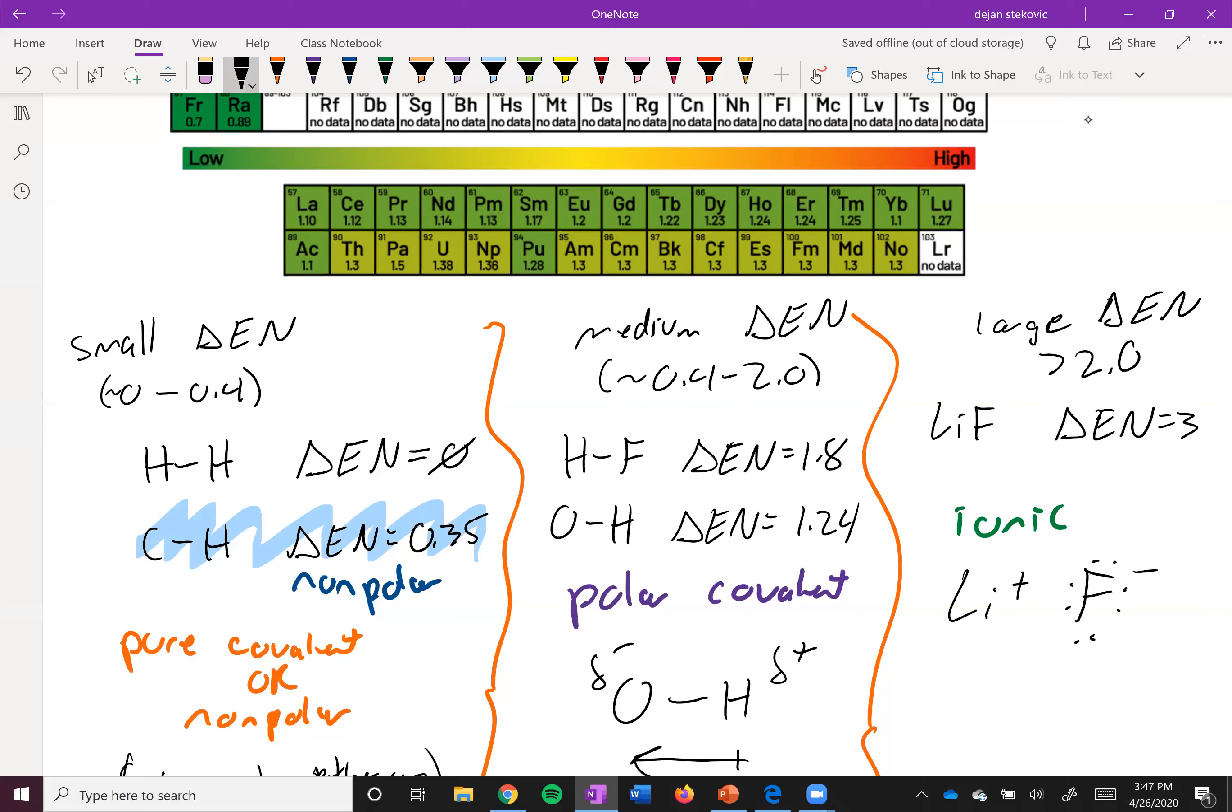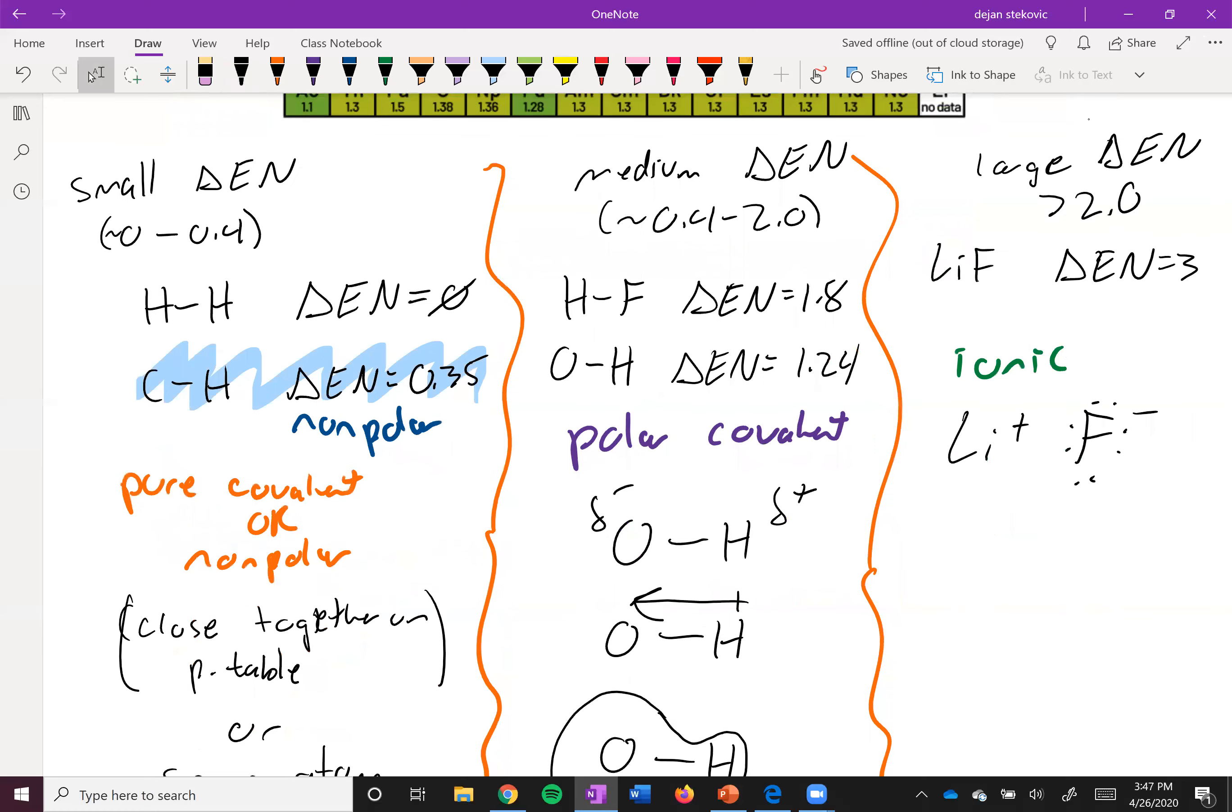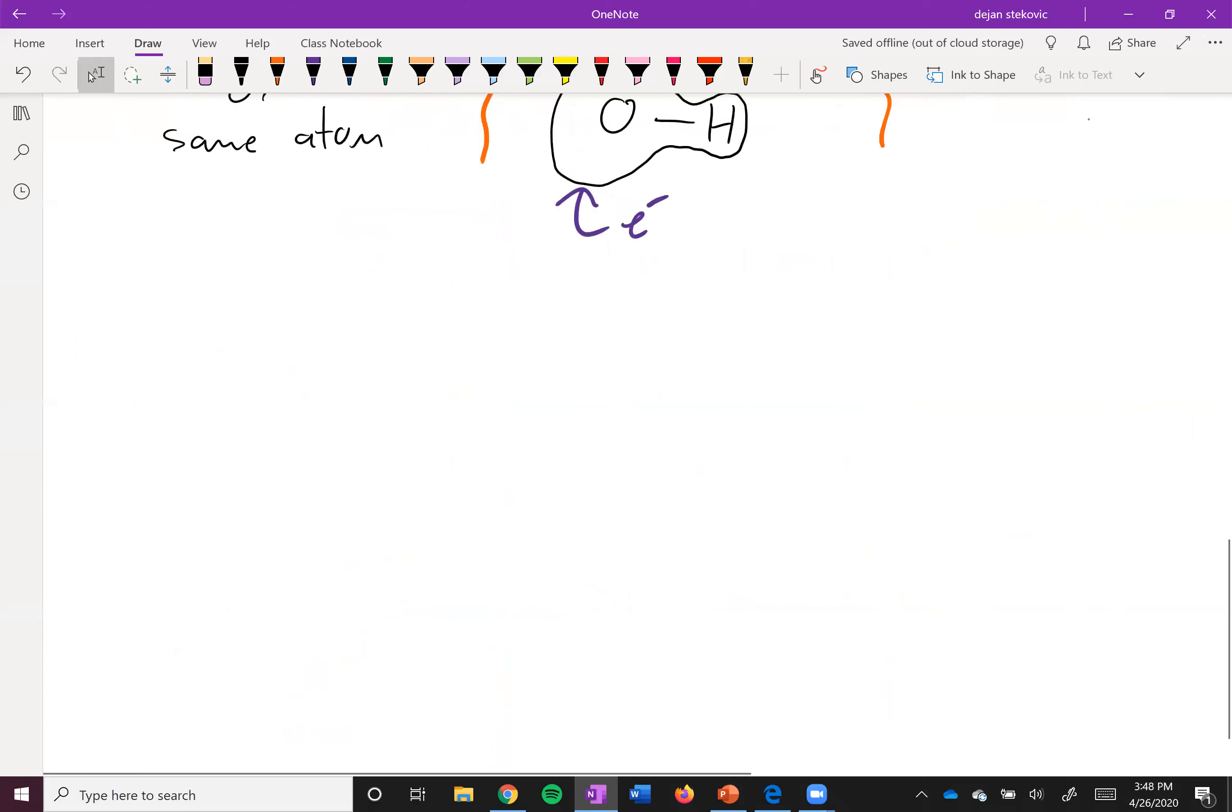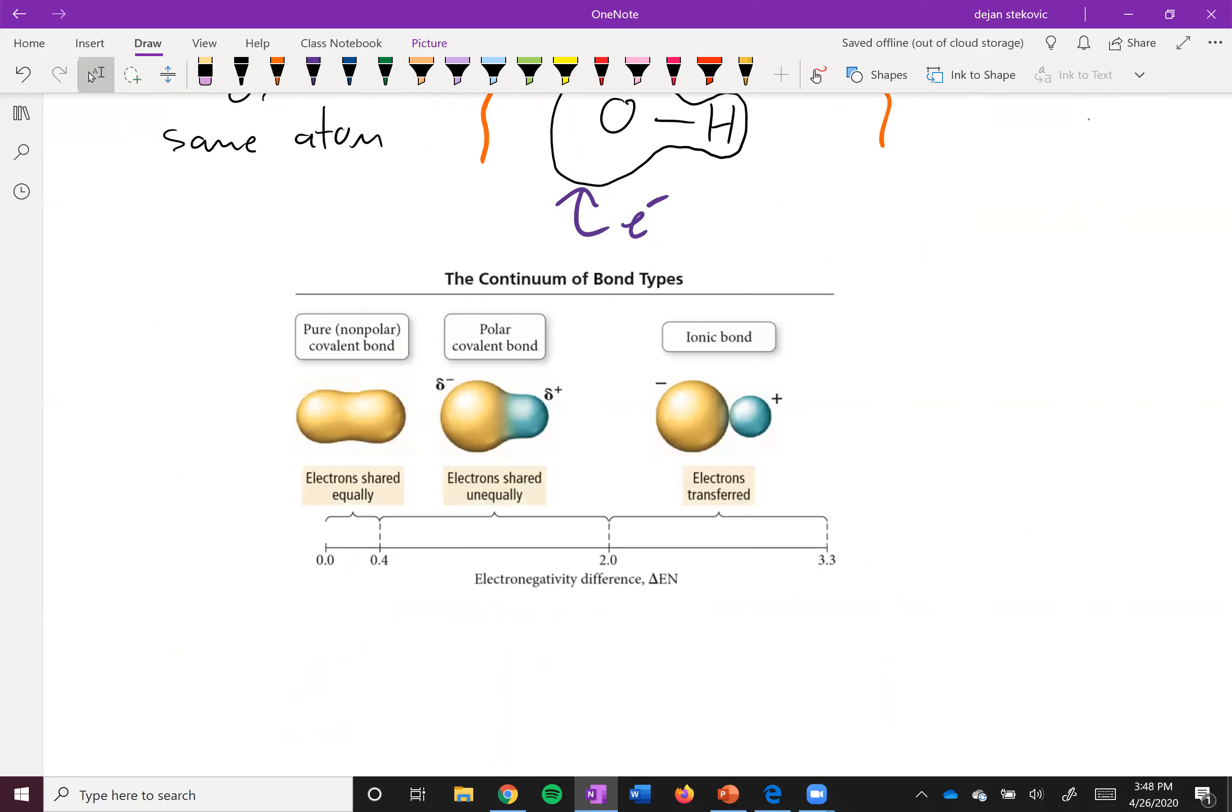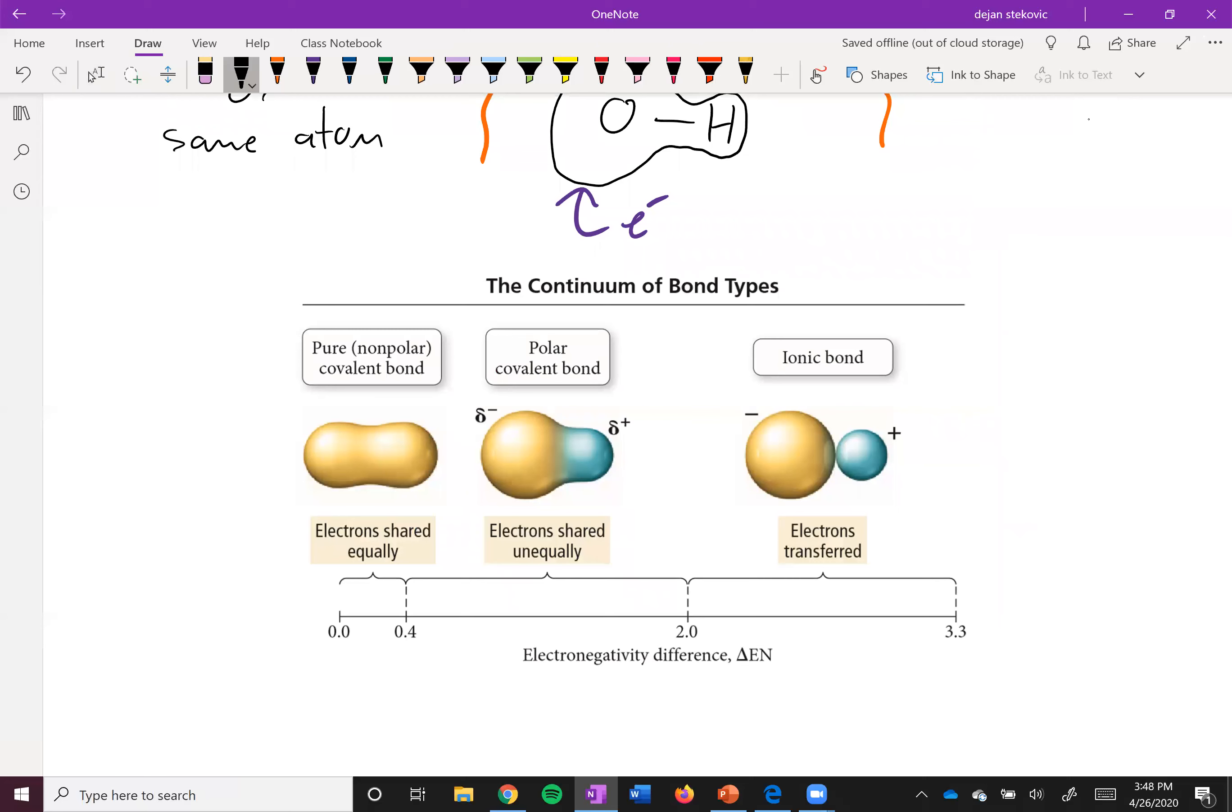And so it's not that one bond characteristically fits into one of these three neat categories. Some fit exactly into the categories, but there's a lot of stuff in between. And so here you have this kind of continuum of bond types as we increase the difference in electronegativity, right?